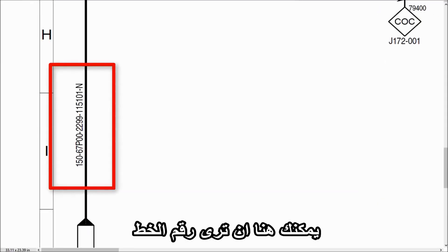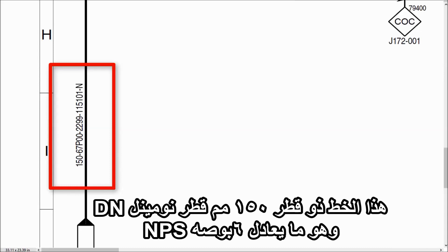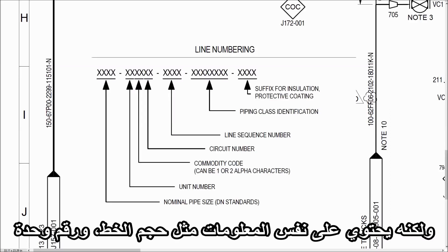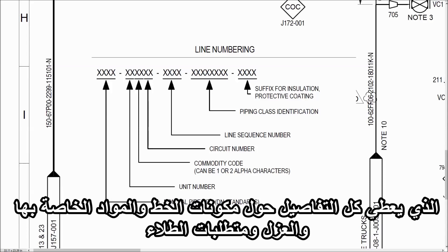Here you can see the line number. It is a 150mm diameter line as per DN standard, which is equivalent to 6 inch NPS. Different companies follow different terminology for the line number, but it contains the same information: line size, unit number, commodity code that identifies the fluid inside the line, circuit number, line sequence number, and piping class — which gives all the details about piping components, their material, insulation, and coating requirements.